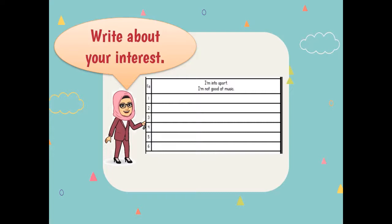All right children. After you have done the previous task, it's time for you to write about your own hobbies and interests. When you write, make sure you use the key phrases that we have learned earlier — the positive and negative key phrases. Write down what your hobby is and what your interest is. Once you are done, you can turn in your homework to me through the WhatsApp group.